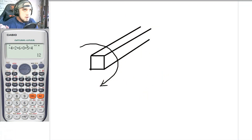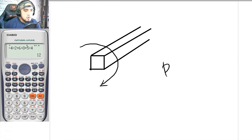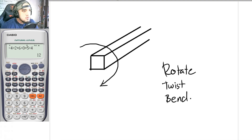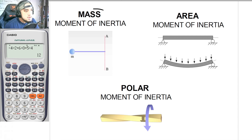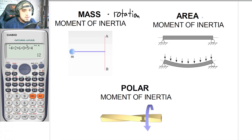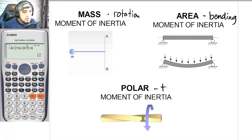So once again, when we apply moments, the three possible scenarios are: for the object to rotate, for the object to twist, or to bend. In moment of inertia we have three types: mass moment of inertia, area moment of inertia, and polar moment of inertia. The mass moment of inertia is the resistance to rotation. The area moment of inertia is the resistance to bending. And the polar moment of inertia is the resistance to torsion or twisting.